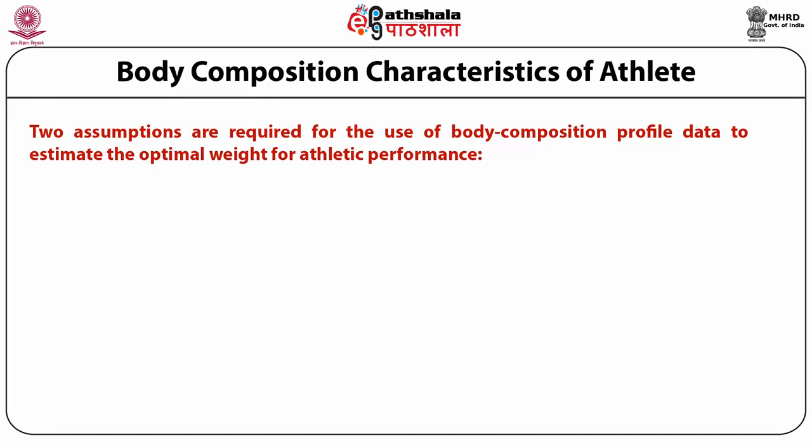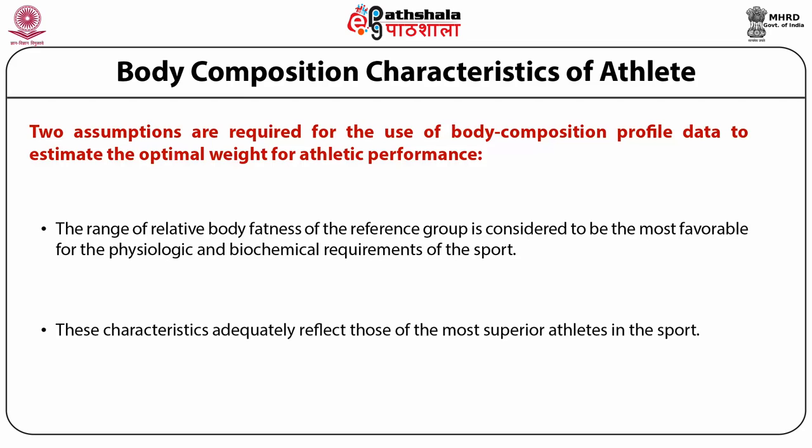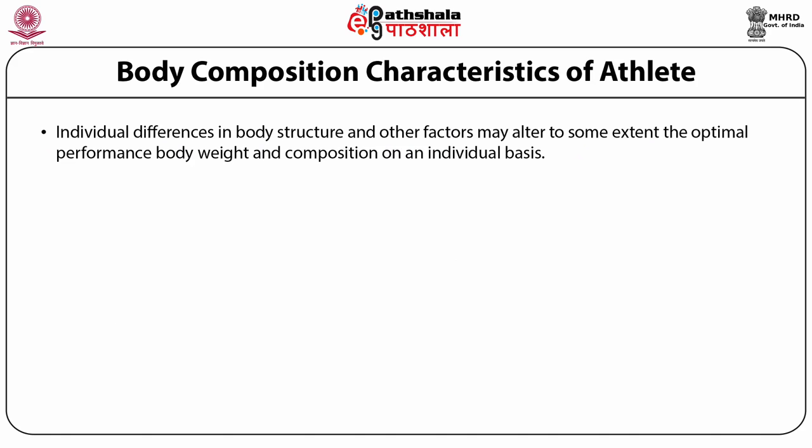Two assumptions are required for the use of body composition profile data to estimate the optimal weight for athletic performance. Number one, the range of relative body fatness of the reference group is considered to be the most favorable for the physiologic and biochemical requirements of the sport. And number two, these characteristics adequately reflect those of the most superior athletes in the sport. Individual differences in body structure and other factors may alter to some extent the optimal performance body weight and composition on an individual basis.